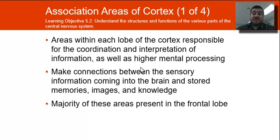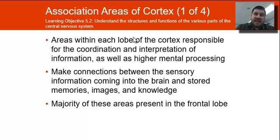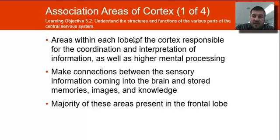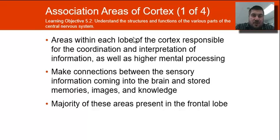The association areas within the cortex are responsible for the interpretation of information coming in. So instead of just seeing four lines and a window with a handle, we know that's a door and that we can walk through it. It helps us interpret information coming in through our senses.